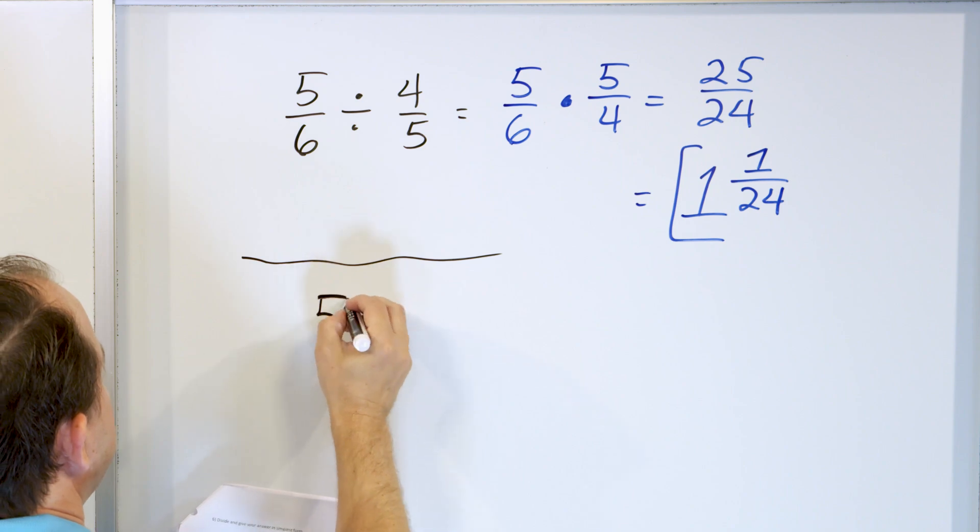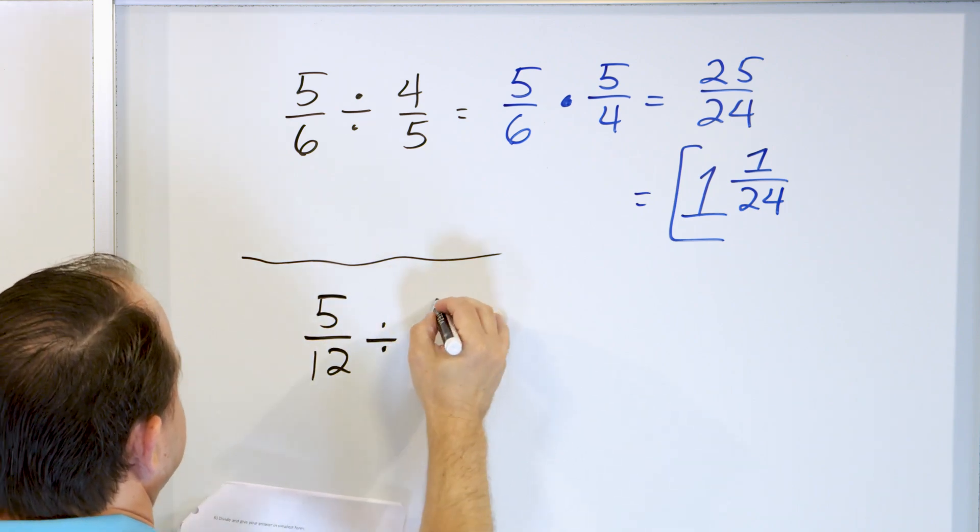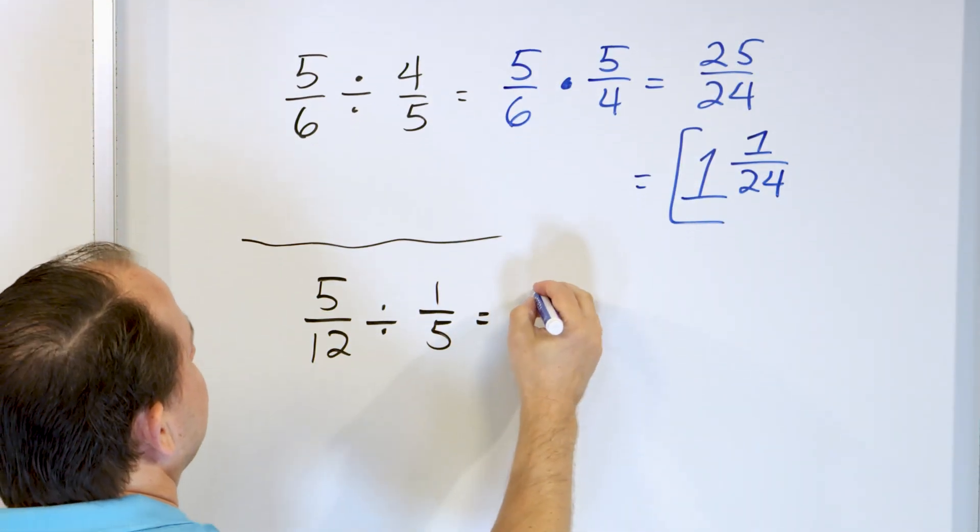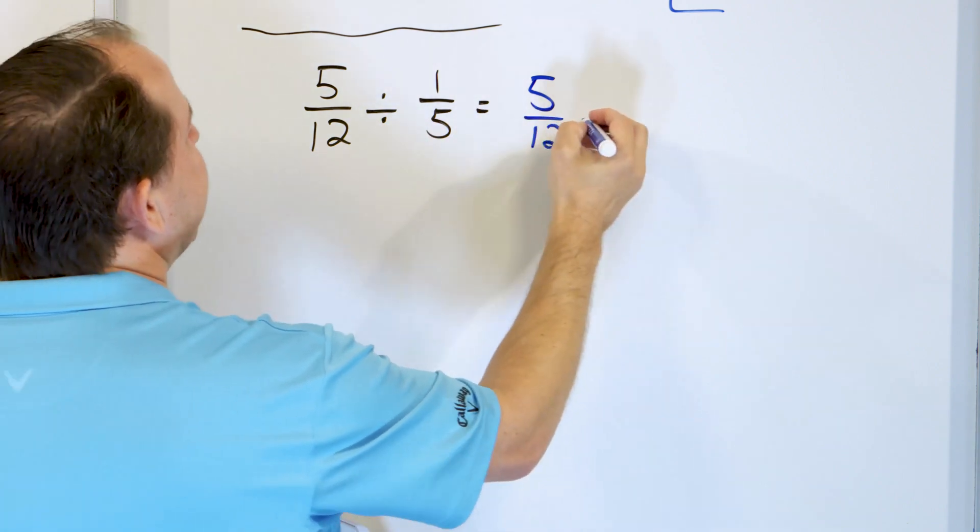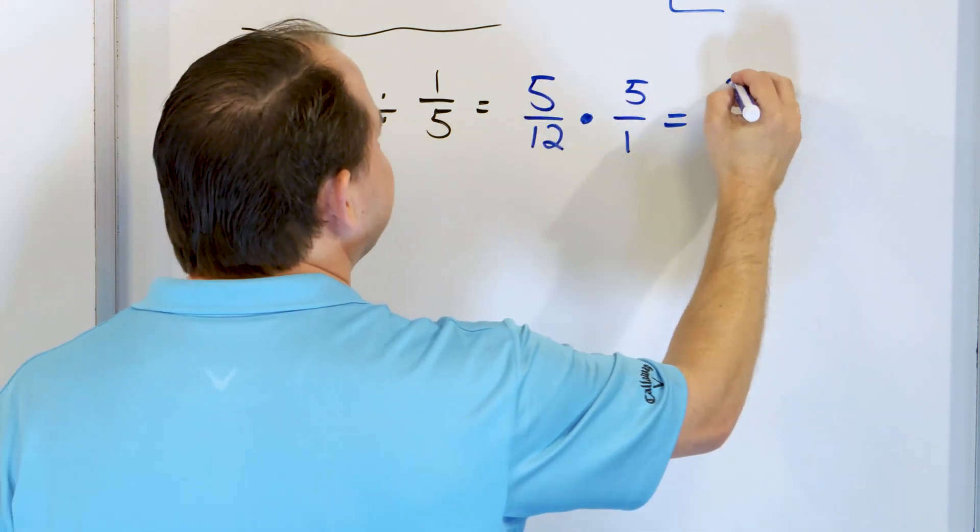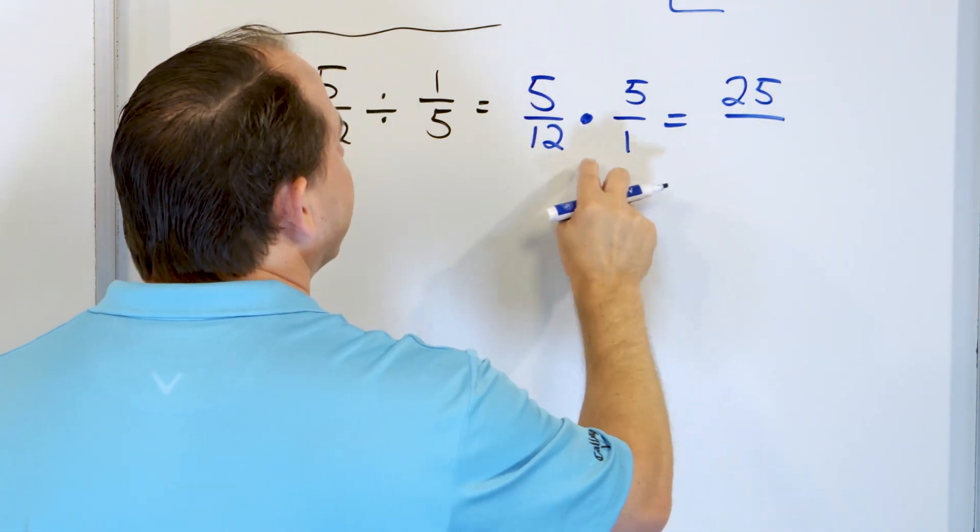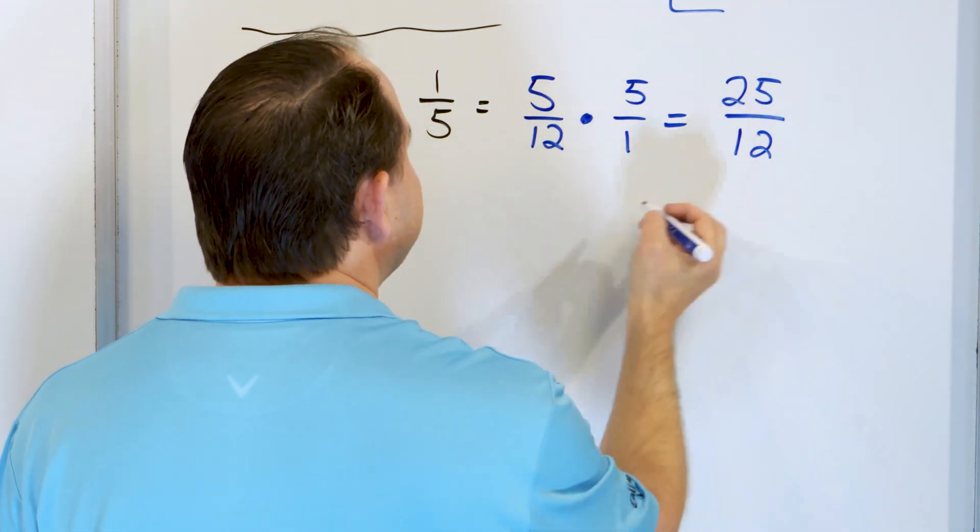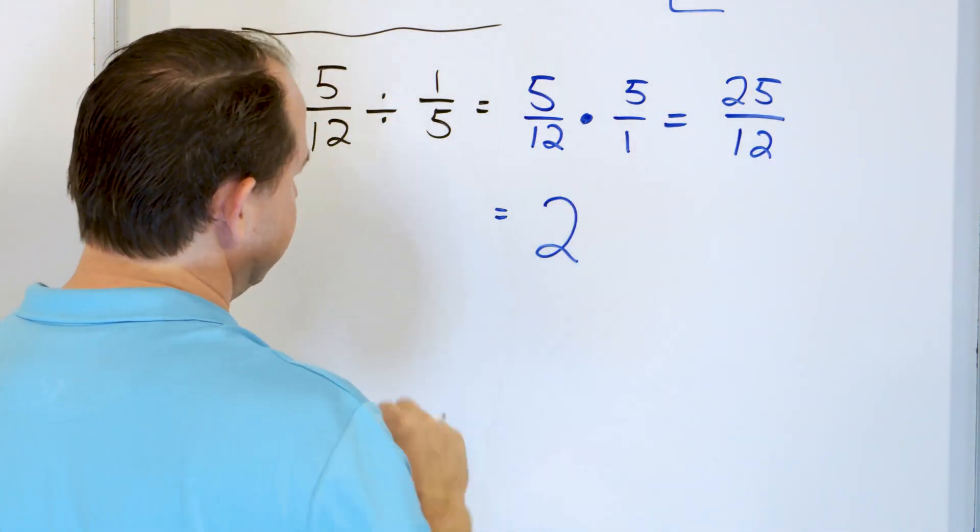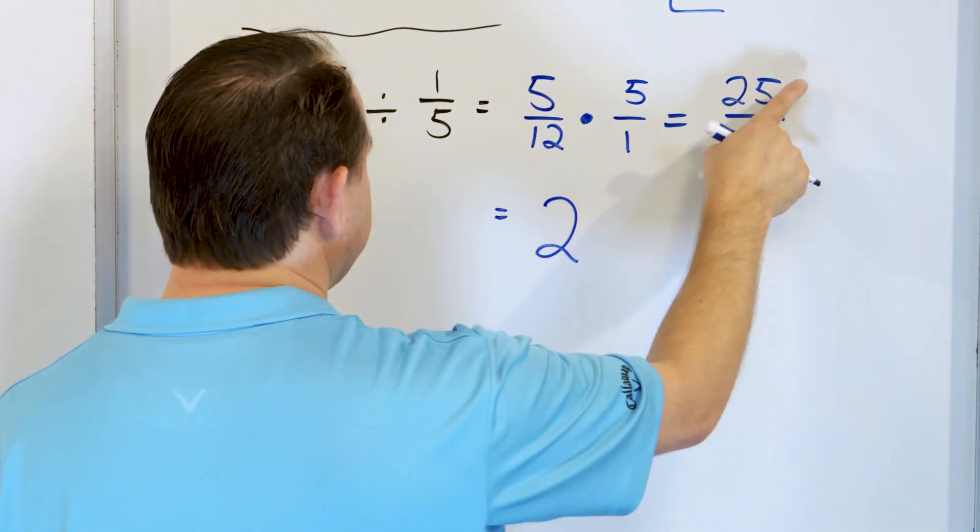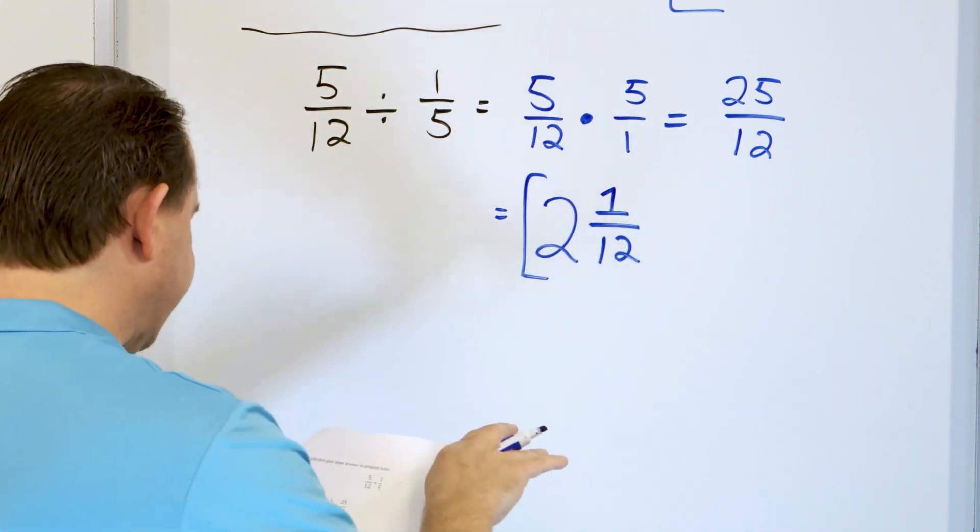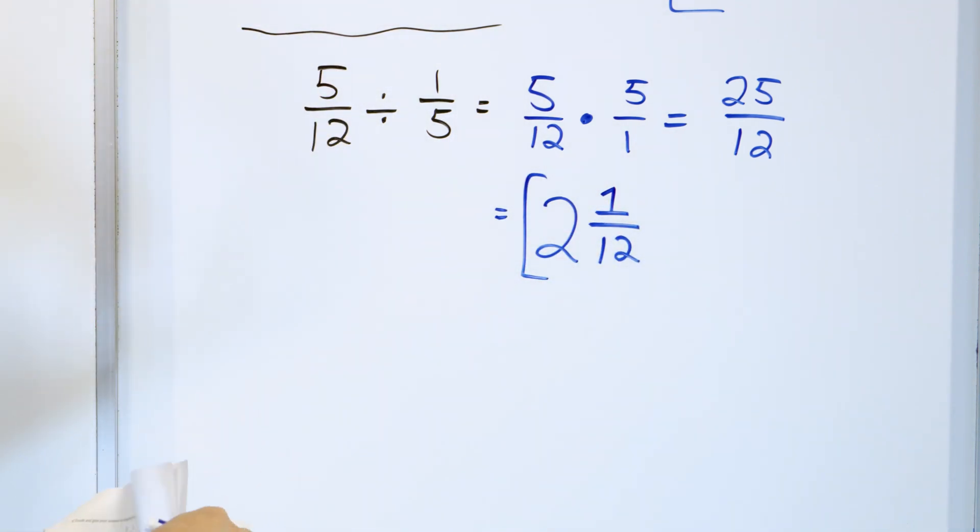Almost done. Let's take a look at 5/12 and we'll divide it by 1/5. So then we keep the 5/12, change the multiplication, and we flip this guy over to 5 over 1. 5 times 5 is 25 and 12 times 1 is 12. Now, this is an improper fraction. So 12 times 2 is 24. That's as close as I'm going to get. 12 times 2 is 24. The difference between 25 and 24 is 1 out of 12. So the answer is 2 and 1/12. And that's the final answer.